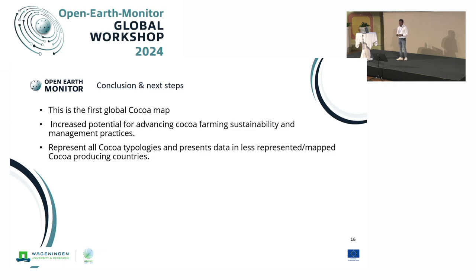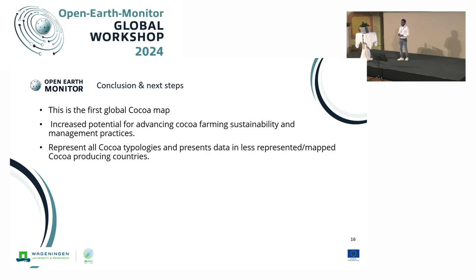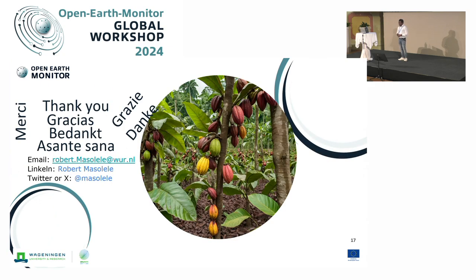To conclude: this will be the first global cocoa map, and we hope it will help increase sustainability for farmers and help governments implement policies which will benefit farmers. We represent all the typologies, and our hope is that you can differentiate in the products where you have cocoa which are monocrop and cocoa which are agroforestry. I think this will be very useful for people to take on and analyze this data. Thank you, and I welcome your questions.